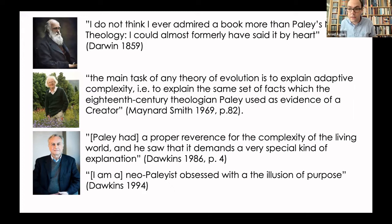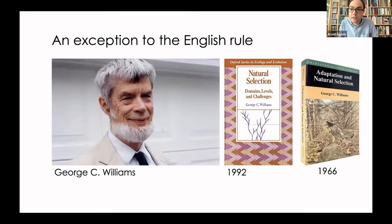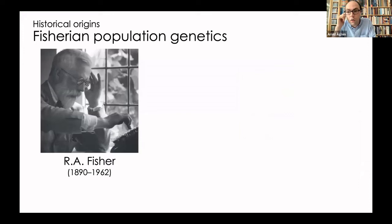A good caveat — especially for those of us not trained in history — is that it is easy to be seduced by these nice patterns. The main caveat is George Williams, who is American and does not fit the story of the English public school, Oxbridge tradition. He comes from a much humbler background in America. And yet he too had this fascination with Paley — in Adaptation and Natural Selection he includes references to Paley's argument, and in one of his very last books, simply titled Natural Selection, he includes excerpts from Paley's Natural Theology as an appendix.